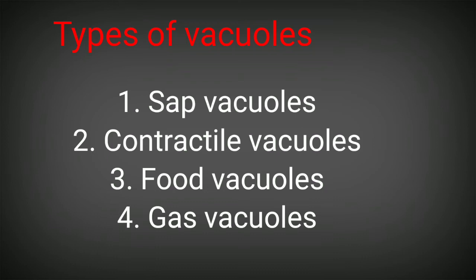Some vacuoles are gas vacuoles, which occur in prokaryotes where the vacuoles store gases. These regulate the buoyancy of the cells, provide mechanical support, and also protect the prokaryotes from harmful radiation. So depending upon their different functions, we find different types of vacuoles: sap vacuoles, contractile vacuoles, food vacuoles, and gas vacuoles.